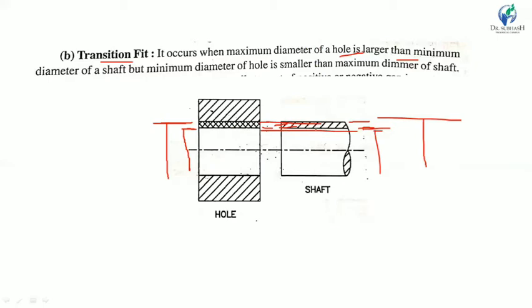Types of transition fit include: force fit, tight fit, ringing fit, and push fit. In transition fit, the tolerance zones overlap, so fitting may result in either a small positive or small negative clearance depending on the actual dimensions.